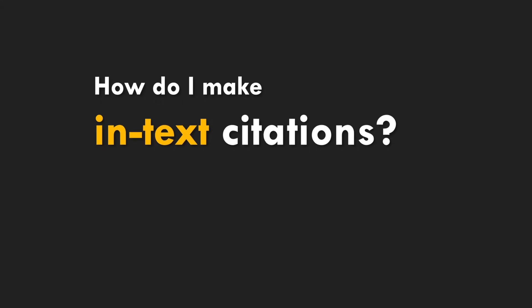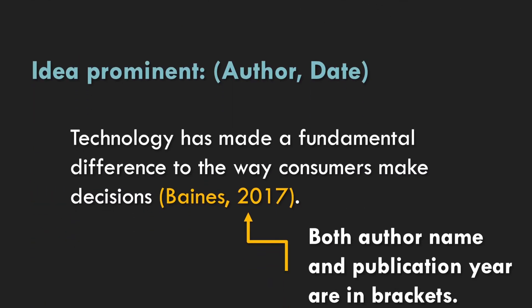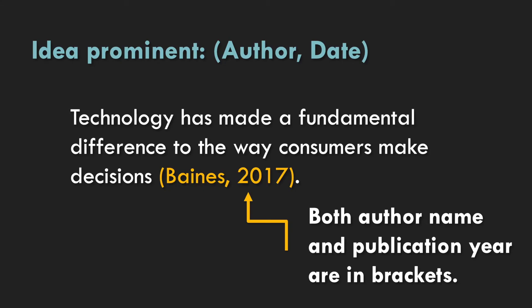How do you make in-text citations? There are a number of different ways. An author-prominent in-text citation uses the author's name in the sentence — for example, 'Baines (2017) suggests that technology has changed the way consumers make decisions.' An idea-prominent style focuses more on what the author said rather than who they are, with both the author name and publication year in brackets at the end: 'Technology has made a fundamental difference to the way consumers make decisions (Baines, 2017).' Both sentences say a similar thing but the emphasis has changed.